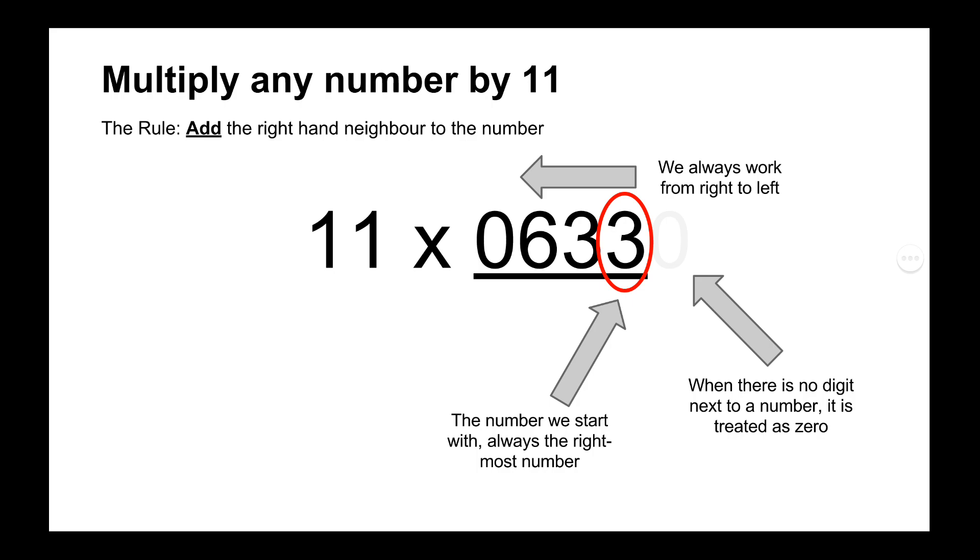Now we always work from the right-hand side to the left, in this case our starting number would be 3. And when we have to deal with neighbors as outlined in the rule add the right-hand neighbor to the number, 3 doesn't have a neighbor number so we just assume that it's 0.